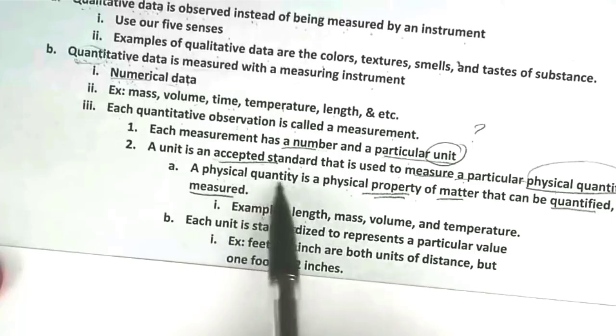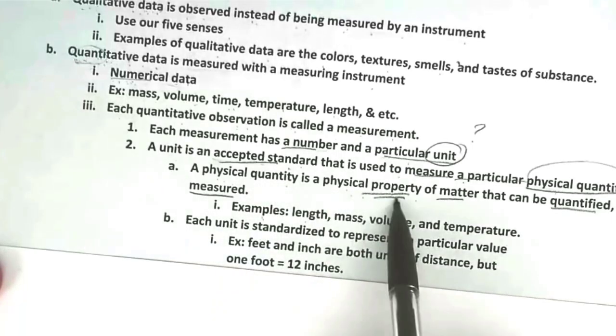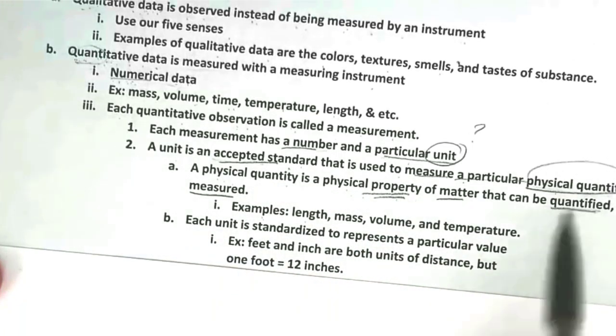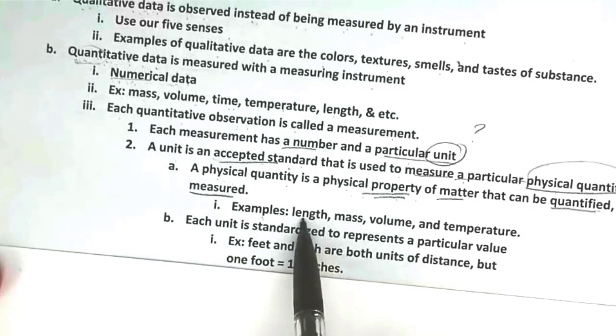Examples of physical quantity or physical properties that can be quantified or measured are length, mass, volume, and temperature of the substance.